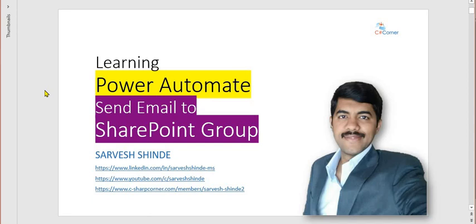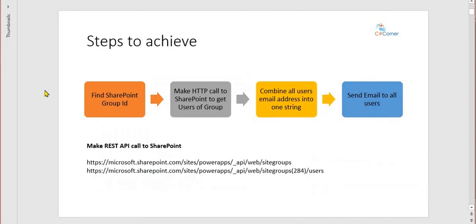In Power Automate you can send an email to an individual user, an Office 365 group, a team, or a distribution list, but there is no provision to send an email to a SharePoint group. Power Automate is not able to understand what a SharePoint group is because it's not really built only for SharePoint.